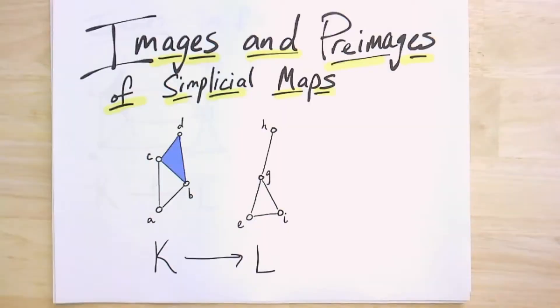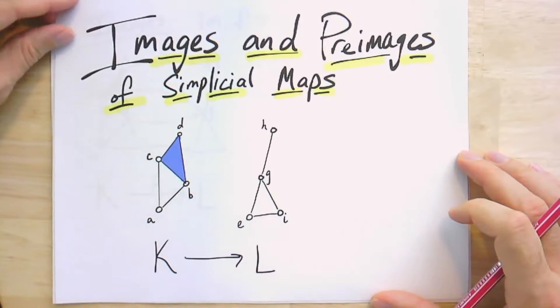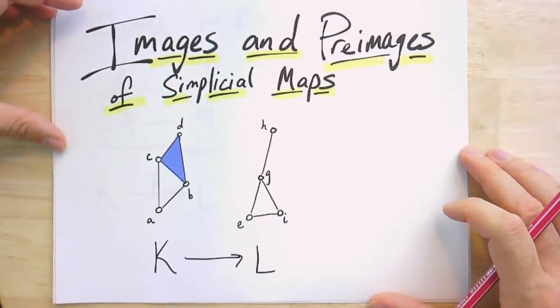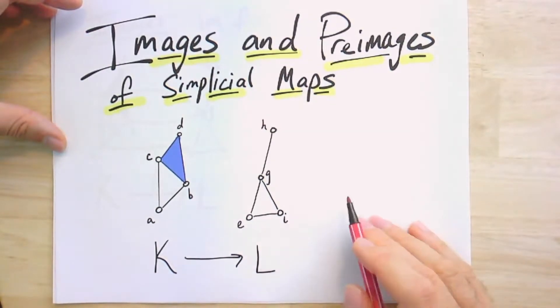To get a better handle on what a simplicial map really does, we're going to look at images and pre-images of simplicial maps. We've seen images and pre-images of functions, and now we're going to do it for simplicial maps. Here is an example of a pair of simplicial complexes, and we can define a simplicial map from K on the left to L on the right.